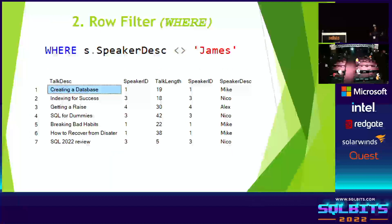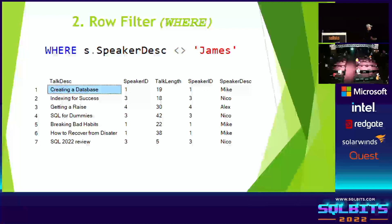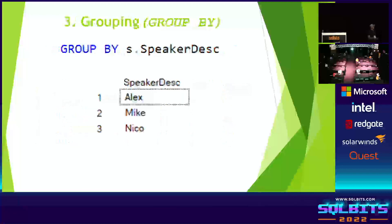The second thing that happens is a row filter — this is your WHERE predicate. SQL Server applies conditional expressions on every single row. Where the conditional expression doesn't evaluate to true, those records are dropped from the result. So any records with a speaker name of James have now been dropped.